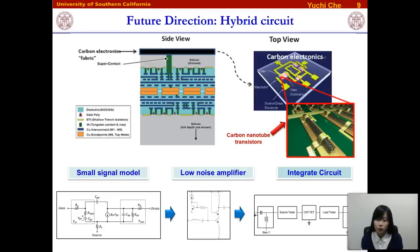In the future, we are very interested in combining CMOS technology with our carbon nanotube electronics. We can build hybrid circuits using CMOS fabrication facilities, which will reduce the cost of fabrication. Moreover, we can also take advantage of the unique high performance of carbon nanotube electronics. This will be a very exciting direction for future research.